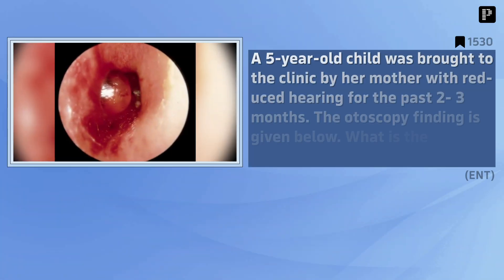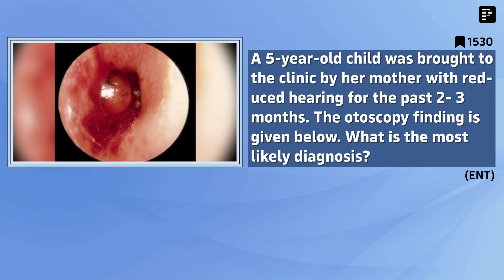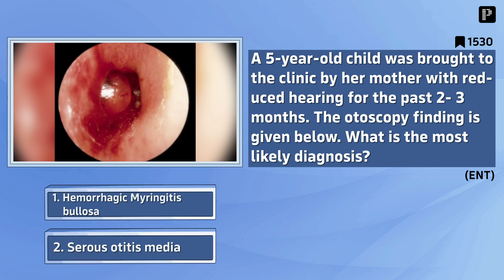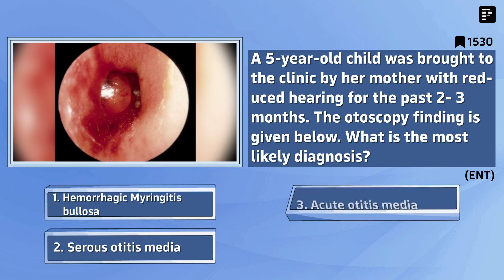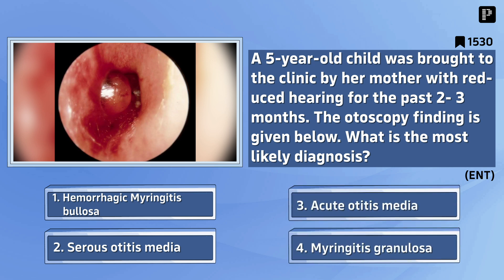Question 3: A 5-year-old child was brought to the clinic by her mother with reduced hearing for the past 2–3 months. The otoscopy finding is given below. What is the most likely diagnosis? Your options are: hemorrhagic myringitis bullosa, serous otitis media, acute otitis media, myringitis granulosa. And the correct answer is hemorrhagic myringitis bullosa.